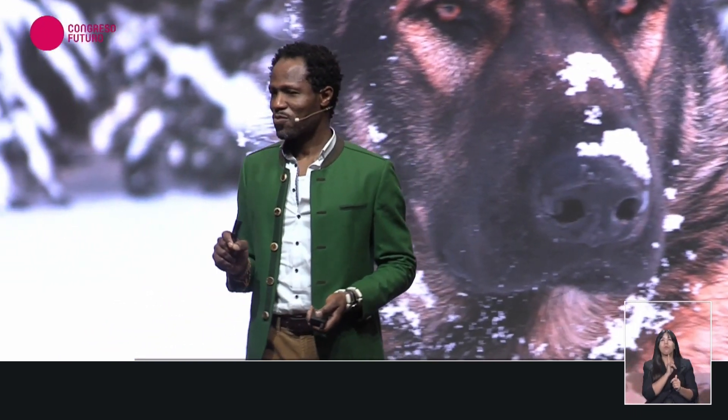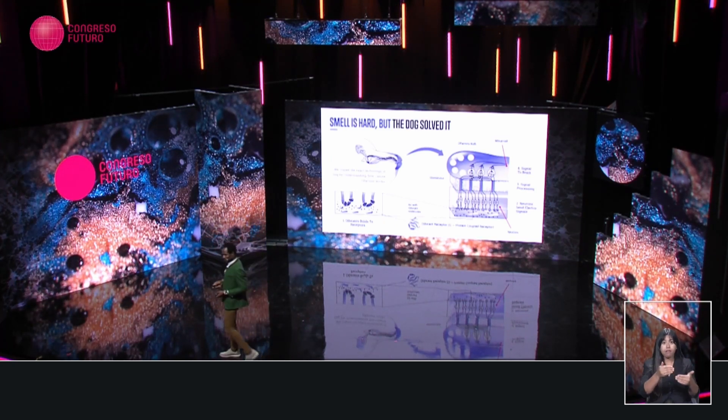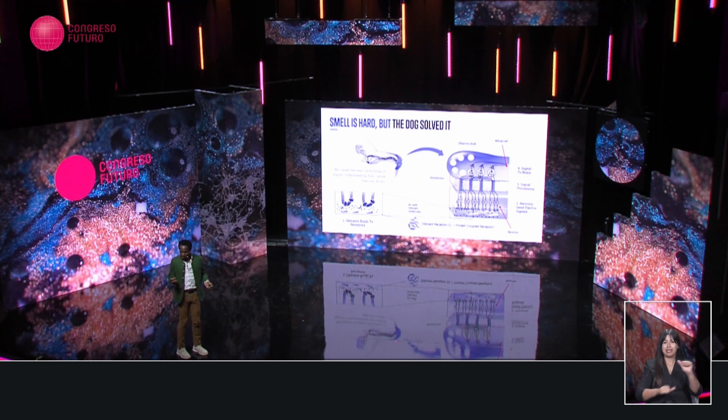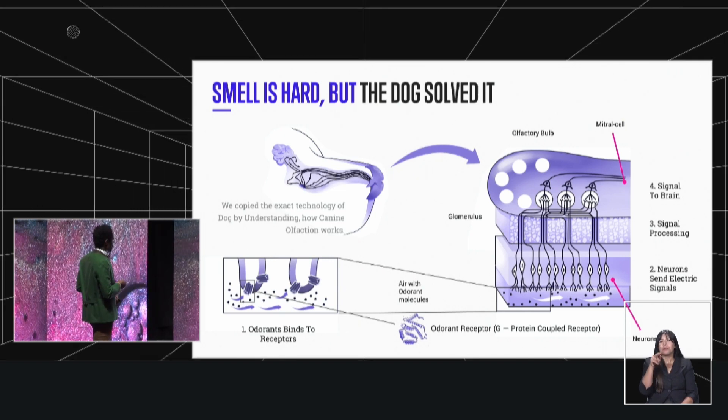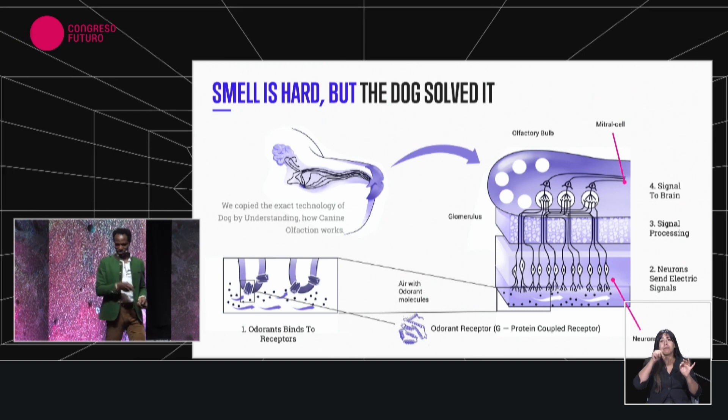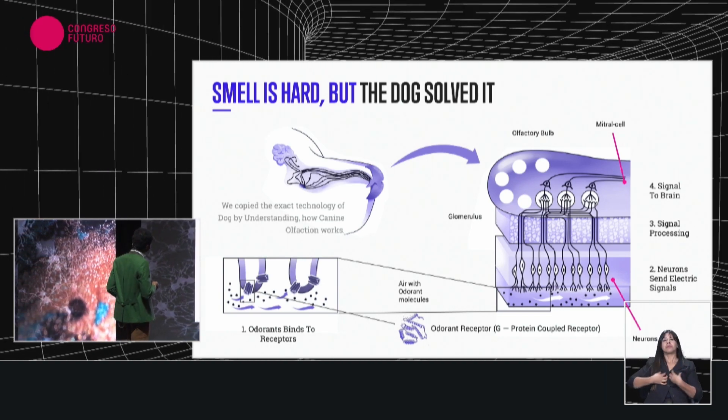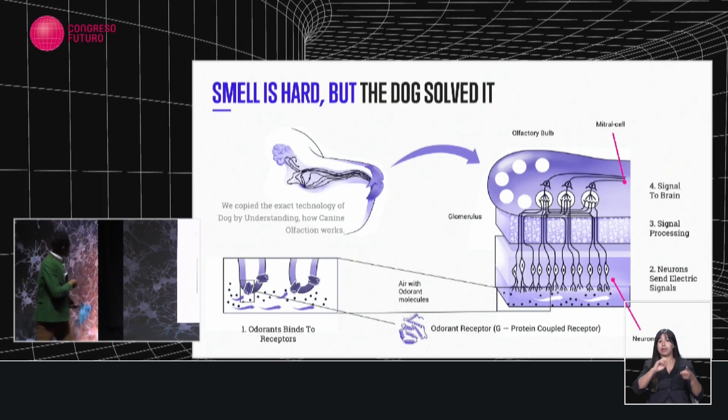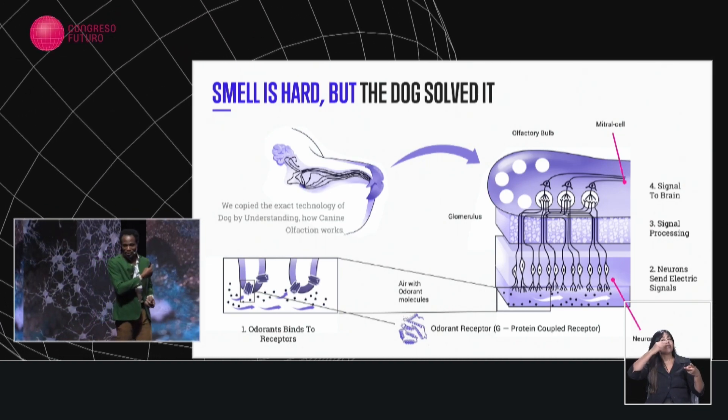So it begs the question, how is it possible that a problem that biology has solved so elegantly still evades us, a technologically advanced species? Let's get into the science a little bit of how that works. The first step in perceiving smell is that you have the smell particles everywhere in the air. Here is a cutout of the dog's nose. The dog's nose serves two functions. One function, it collects the air, the air goes inside and goes to the lungs. The second part is what is interesting for us.